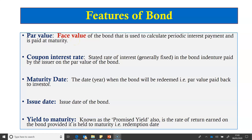Par value, also known as face value, is used to calculate the periodic interest on the bond and is returned at maturity to the investor. The coupon interest rate is used to calculate the interest payment on the bond; it is generally fixed but can also be floating. The maturity date is the year when the bond will be redeemed — when the par value is returned to the investor. The issue date is the date the bond is issued.